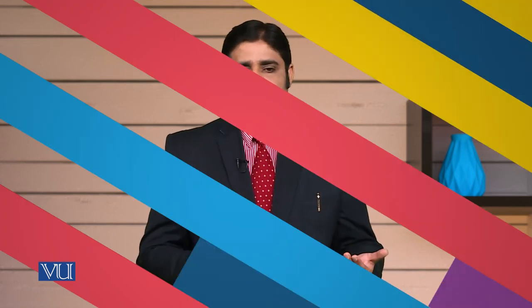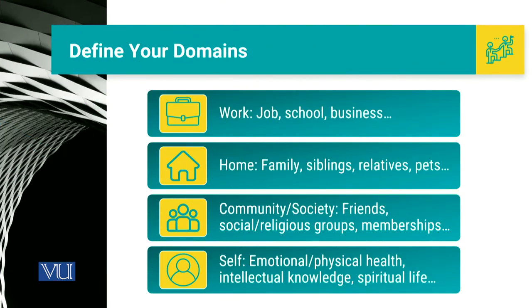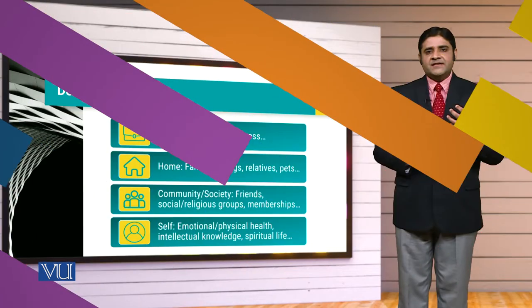When we talk about community or society, that would include friends, social or religious groups, or memberships. And when we talk about the self, that would mean we are basically a composition of emotional and psychological aspects — our emotional and psychological health, our intellectual knowledge, our spiritual life — these are things that are our own mind.